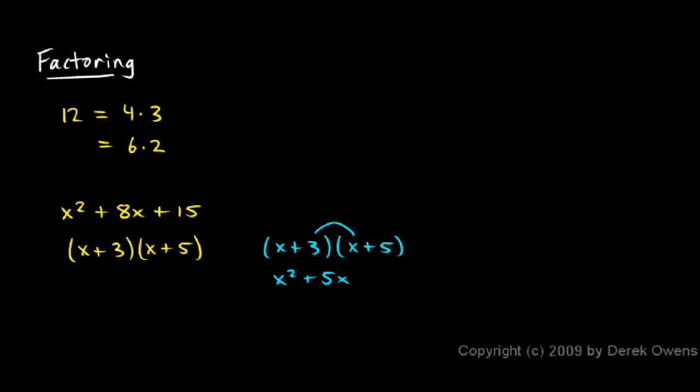And the inner, I have 3 times x. And the last is 3 times 5 is 15. You can see I have x squared plus 8x right there plus 15. So these two things multiplied together do in fact give me that original trinomial.